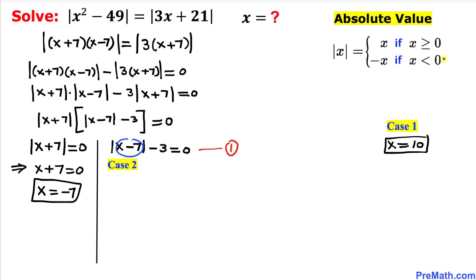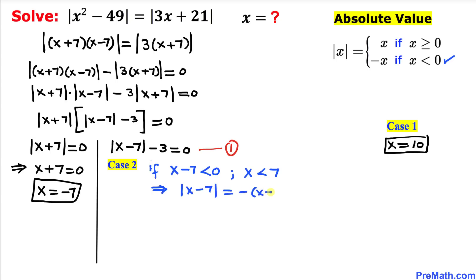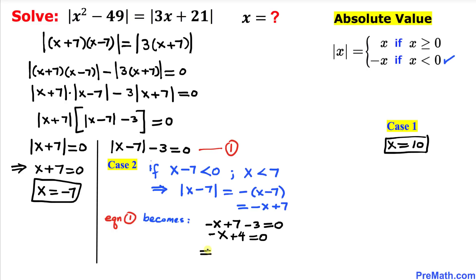In Case 2, we consider x minus 7 less than 0. The absolute value of (x minus 7) equals negative (x minus 7), which is negative x plus 7. So equation 1 becomes: negative x plus 7 minus 3 equals 0. Solving this, x equals positive 4.